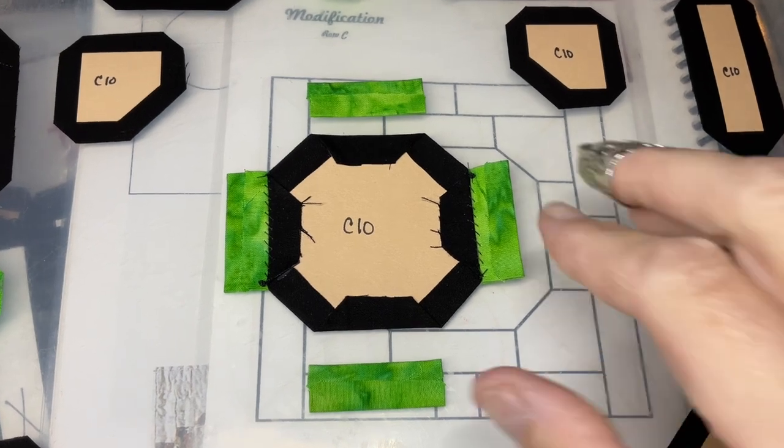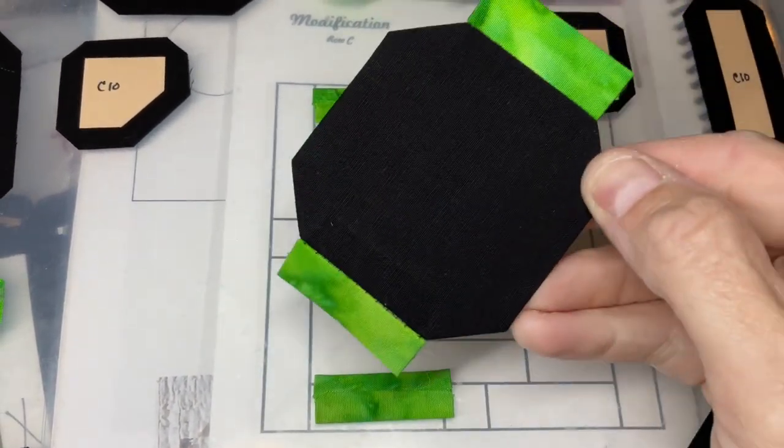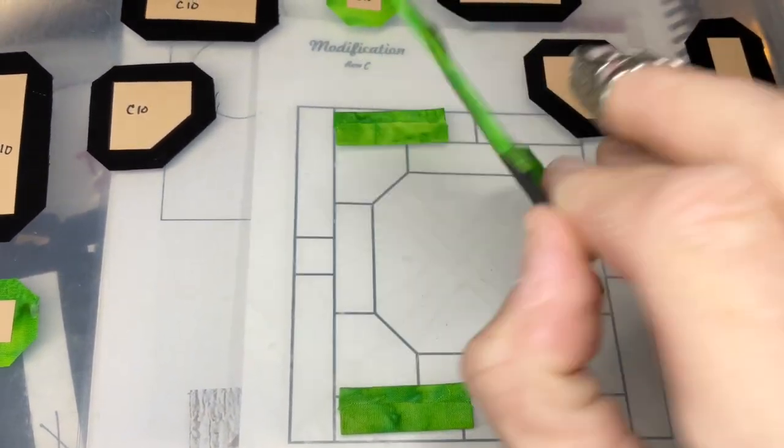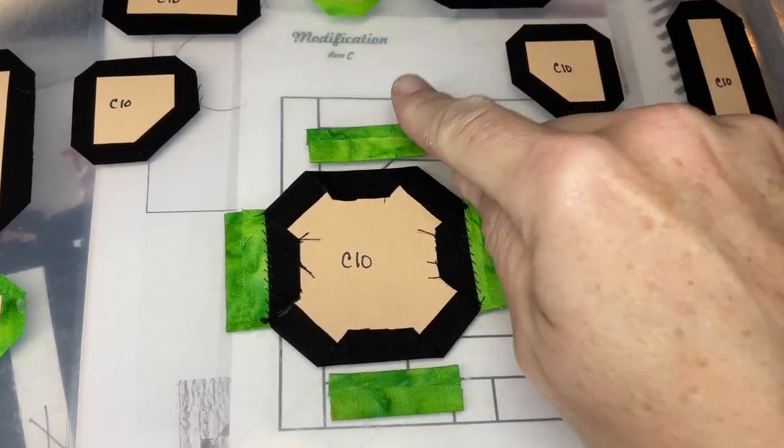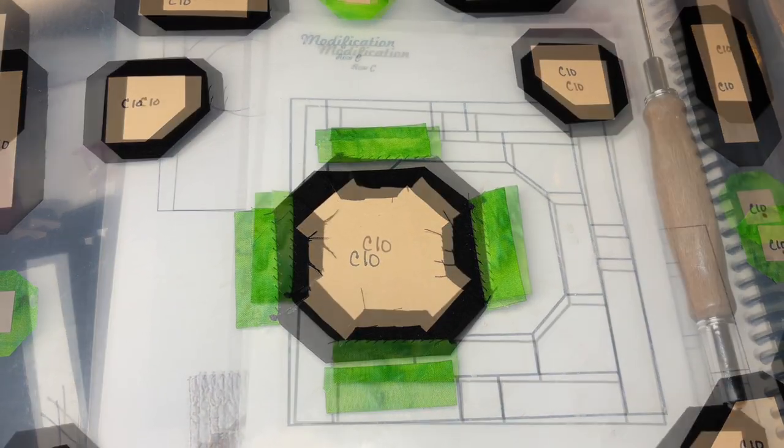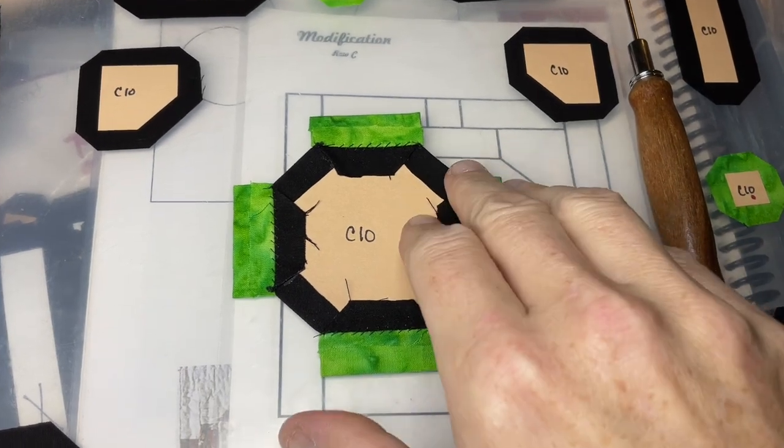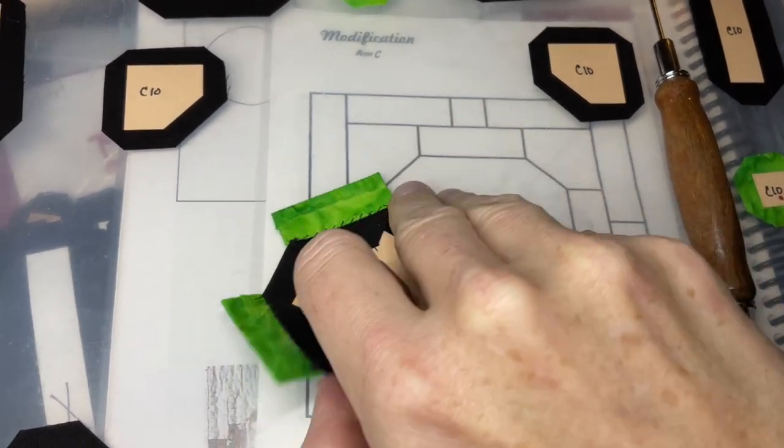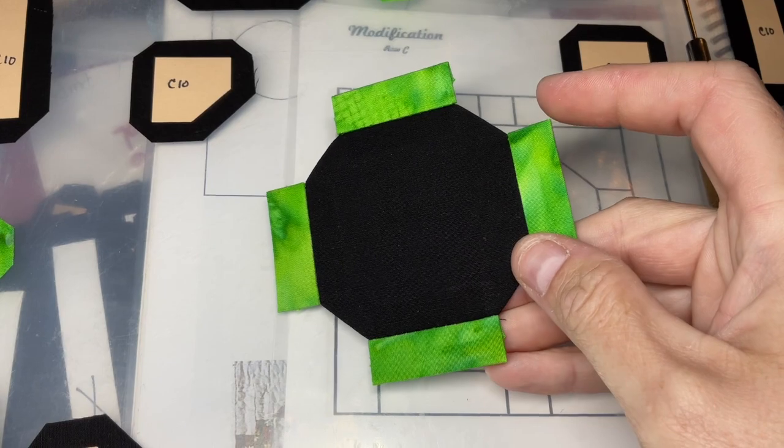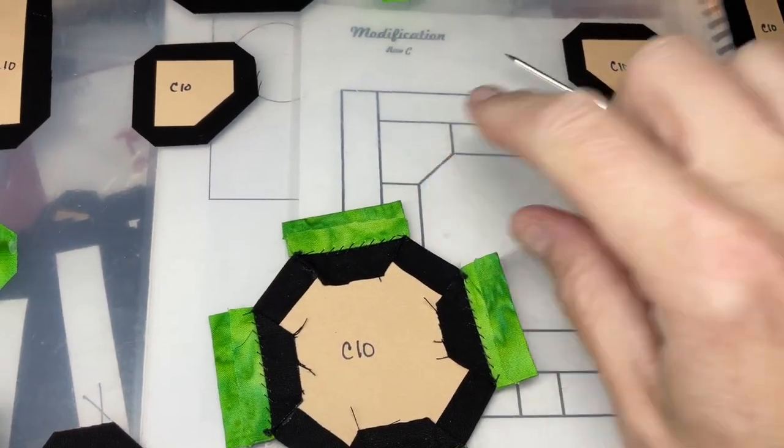So I've basted all five pieces, and I've attached the two outer ones. So this is what it looks like right now, and I'm going to go ahead and attach the other two. So I've got all four rectangles attached to the center octagon. The next thing to do is to attach these corners.